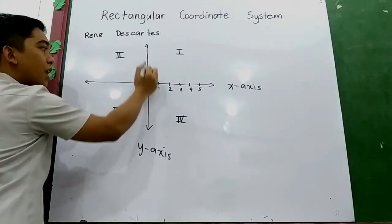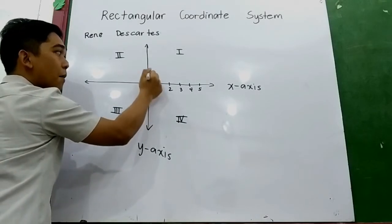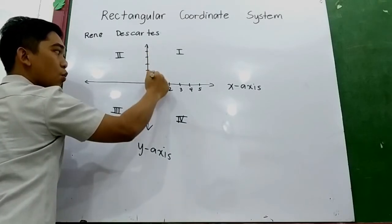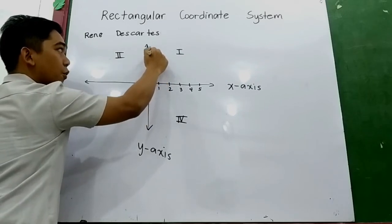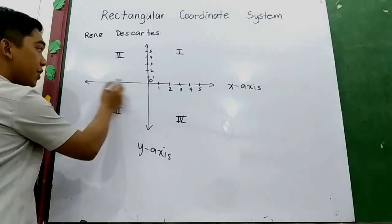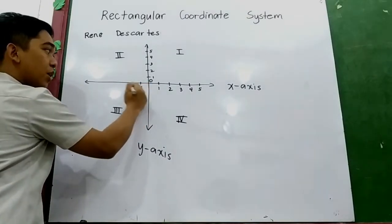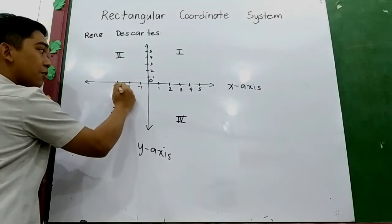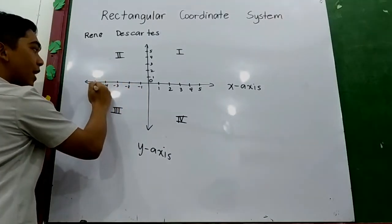On the upper part of the origin are the positive numbers for the y-axis: one, two, three, four, five. On the left side of the origin are the negative numbers: negative one, negative two, negative three, negative four, negative five.